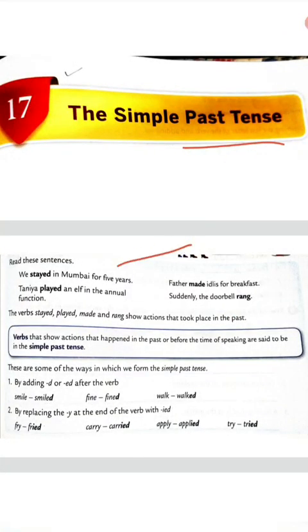Let's read these sentences. We stayed in Mumbai for five years. Father made idlis for breakfast. Tanya played an elf in the annual function.